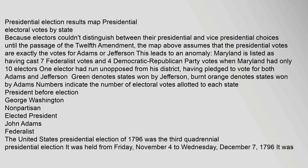Presidential Election Results Map: presidential electoral votes by state. Because electors couldn't distinguish between their presidential and vice-presidential choices until the passage of the Twelfth Amendment, the map assumes that the presidential votes are exactly the votes for Adams or Jefferson. This leads to an anomaly: Maryland is listed as having cast seven Federalist votes and four Democratic-Republican Party votes when Maryland had only ten electors. One elector had run unopposed from his district, having pledged to vote for both Adams and Jefferson. Green denotes states won by Jefferson; burnt orange denotes states won by Adams.